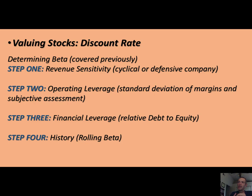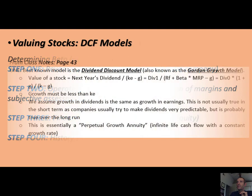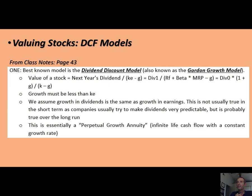The current dividend yield on the S&P 500 (using SPY ETF) is about 1.5%. So your expected return on stocks will be approximately 1.5% plus earnings growth of 4–6%, giving roughly 5.5%–7.5%. Then beta — you need to address whether it's a cyclical or defensive company, its operating and financial leverage, and the history of its rolling beta in Paper 3.